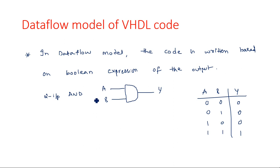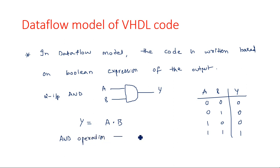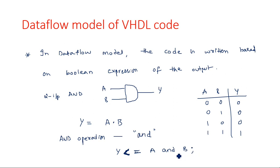In the data flow model, it is very easy to write the VHDL code — just a single line is sufficient to express the entire output equation. Since Y equals A AND B, we use the 'and' operator. In VHDL, the assignment operator is written as '<=' (less than equals), so the line is: Y <= A and B.